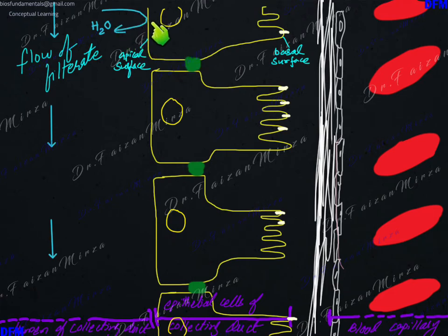Collecting duct is actually impermeable to water, so if water is there in the filtrate, it will not pass through this apical surface. The filtrate will just go out and the collecting duct will allow this filtrate to go out into the renal pelvis.